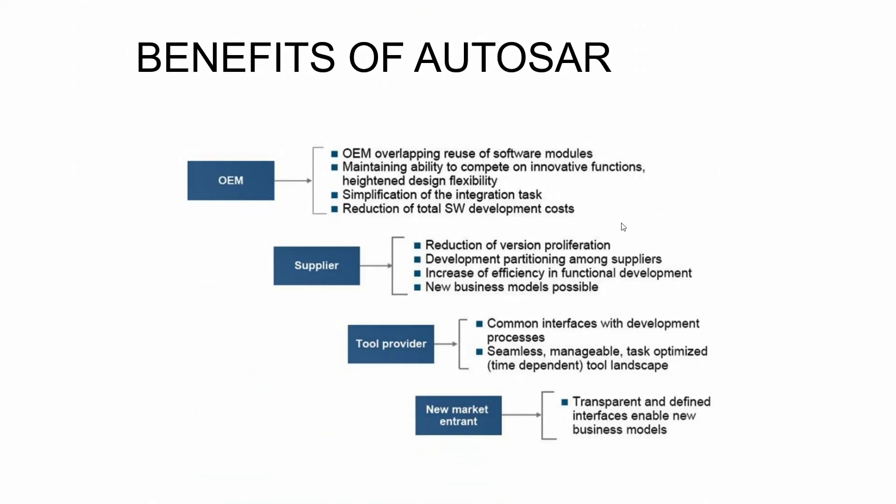The benefits of AUTOSAR extend to everyone actively contributing in the automotive field. For OEMs, AUTOSAR allows the same software code to be reused again and again across different projects. It is more flexible to adapt for different designs and also reduces the time and cost of production, because the same software component can be deployed in other ECUs for other projects. This means OEMs can reduce production costs and avoid redundant development.